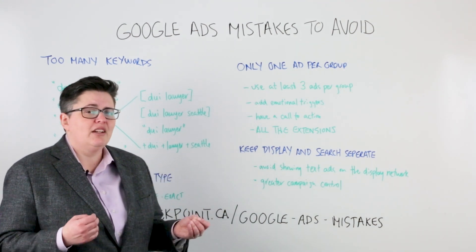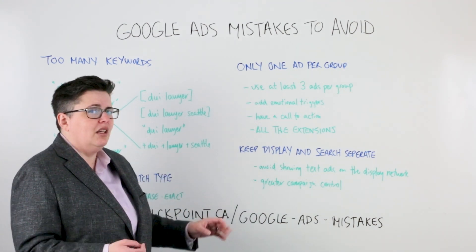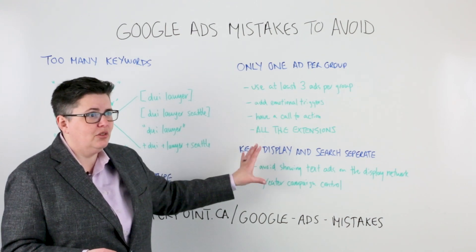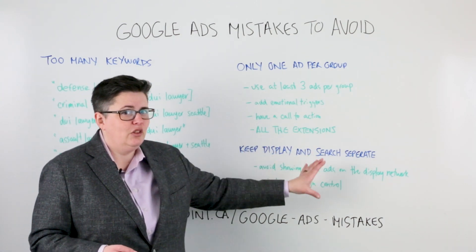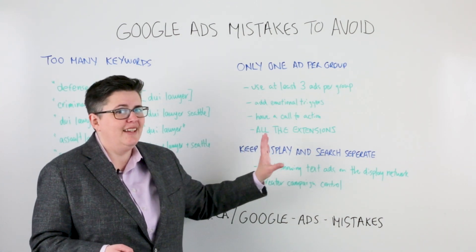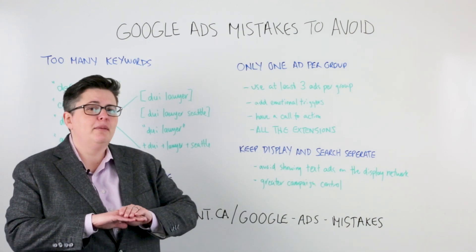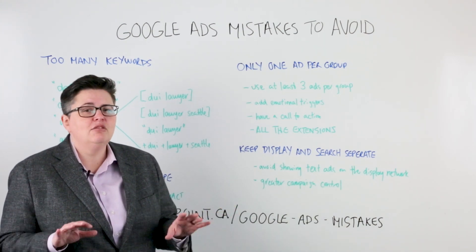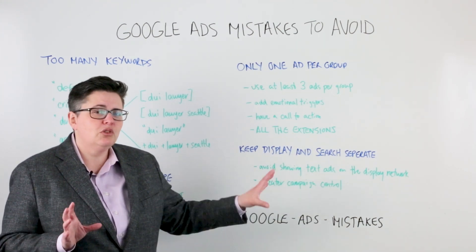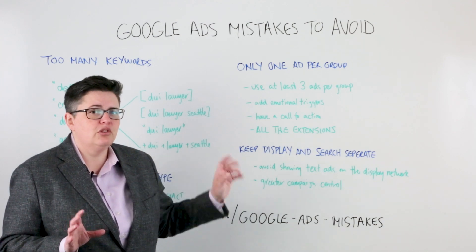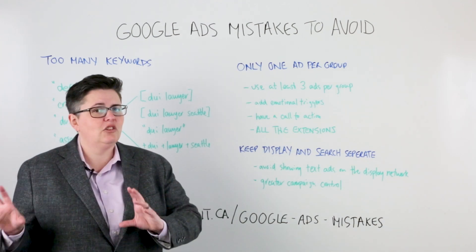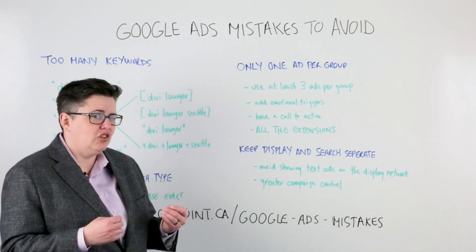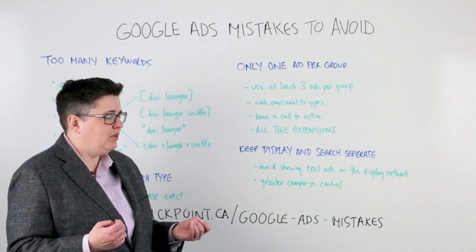So it really gives you extra control by saying: this is a search campaign, it's only on search; this is a display campaign, it's only on display. Keep the two of them totally separate, so you have lots of control over search ads being for search and display ads being for display. Don't mix those two up — make sure to uncheck that default setting.